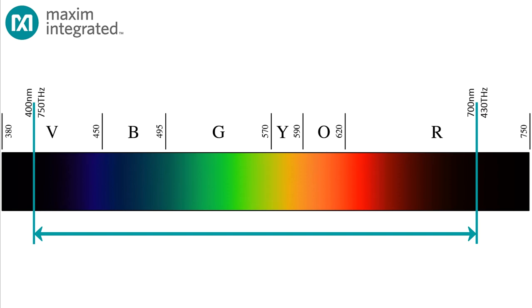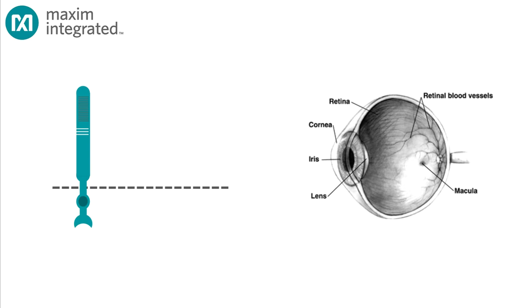Your eyes can perceive all radiation in that range, but it's not really as simple as all that. The retina of the human eye contains two kinds of cells capable of detecting light: rods and cones.